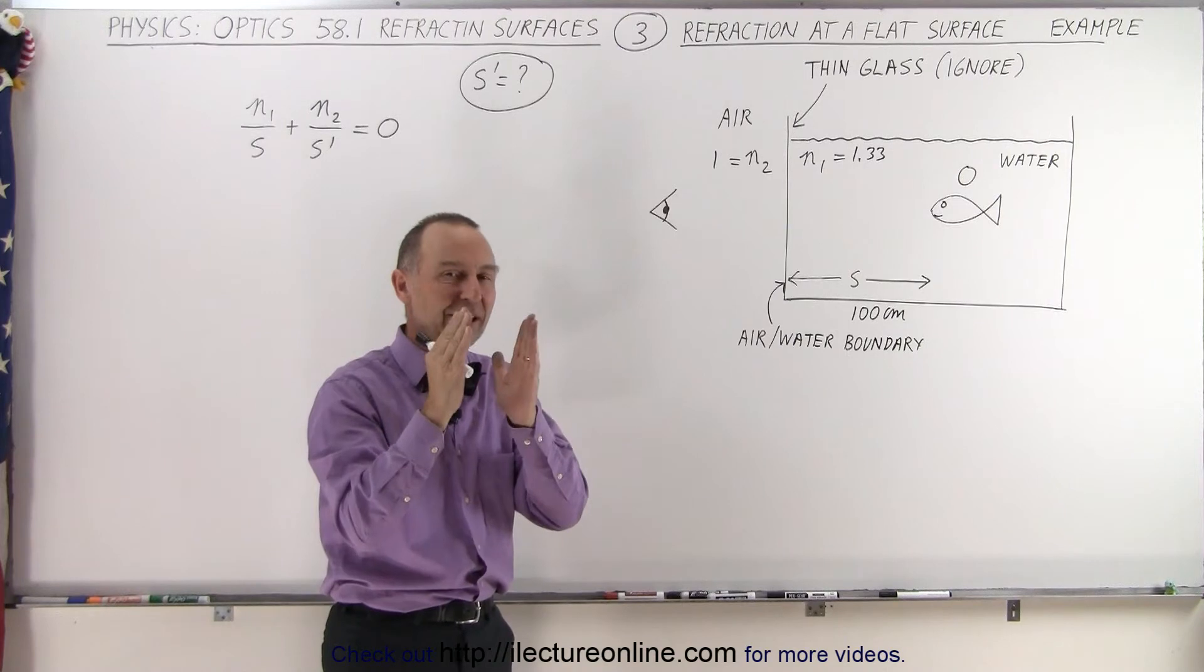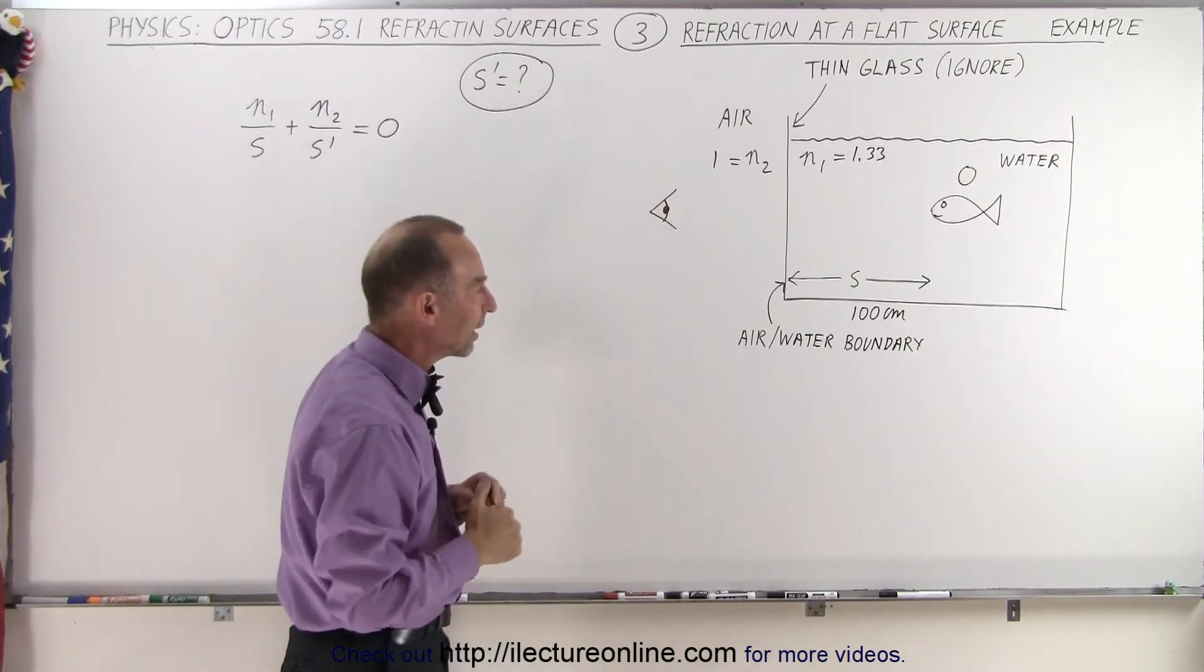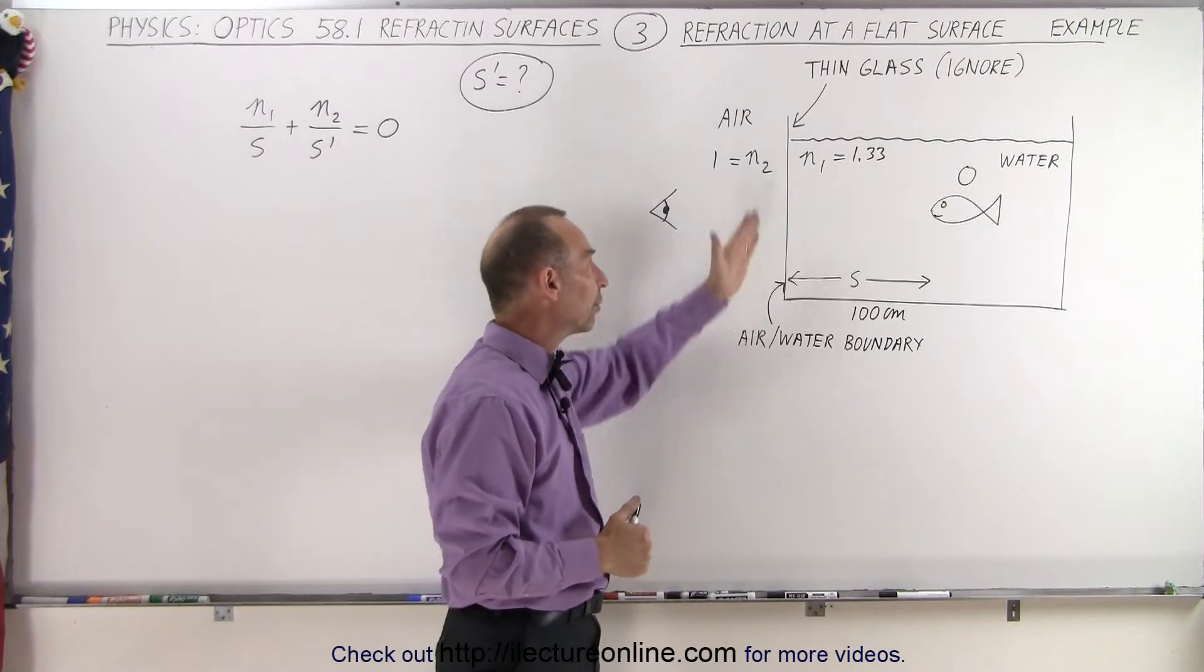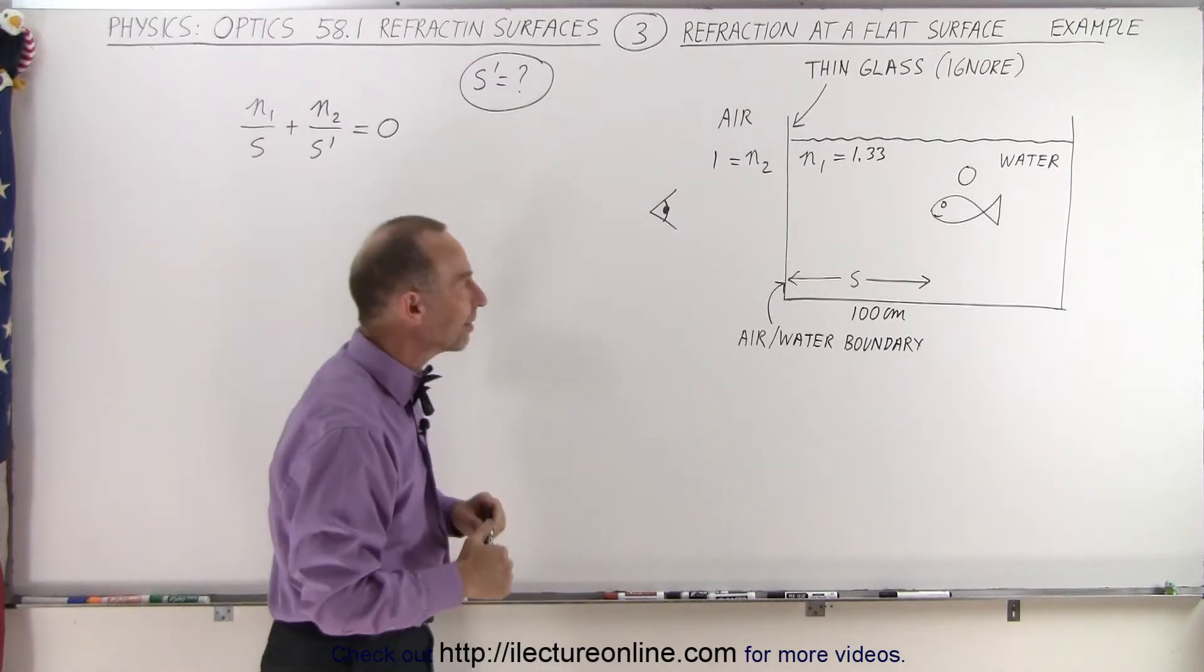Later on we'll show you what would happen when we have a thick piece of glass and we do have to take it into account. So here we have what we call the air-water boundary. We ignore that thin piece of glass in between.